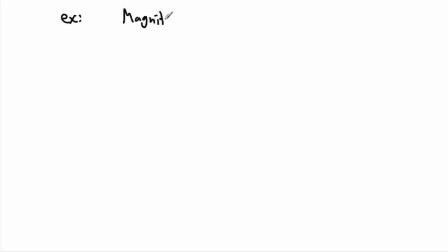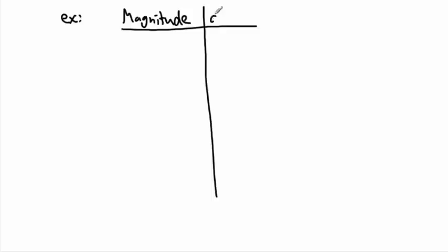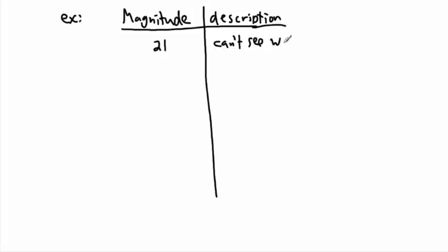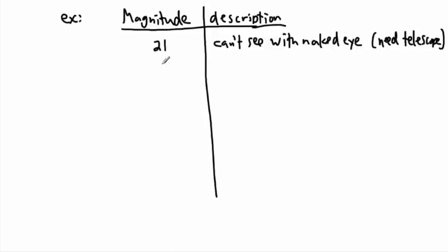Maybe it helps to do some examples. If we make a little table with magnitude values and descriptions: something at magnitude 21 is extremely dim — we can't even see it with the naked eye. You would actually need a pretty good telescope to see it. Magnitude 21 is really, really dim.